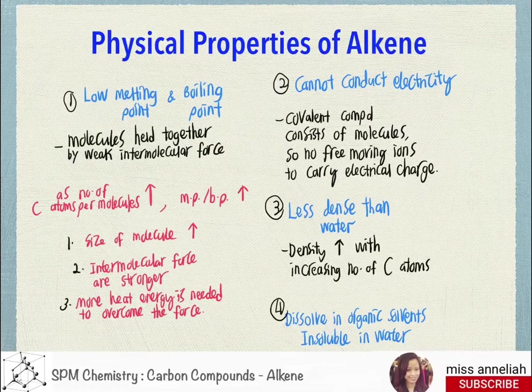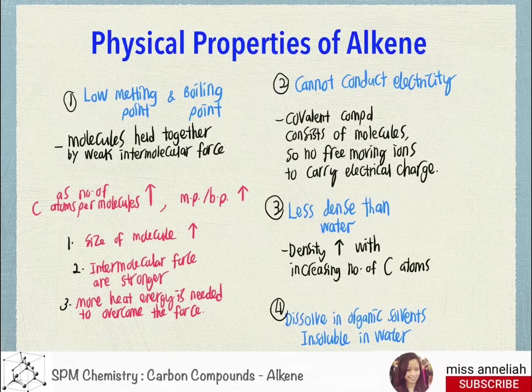Next, we will discuss the physical properties of alkenes, which are very similar to those of alkanes. First, alkenes have low melting points and boiling points because the molecules are held together by weak intermolecular forces. But as the number of carbon atoms per molecule increases, the melting point and boiling point also increase, because the size of the molecules increases, making intermolecular forces stronger, requiring more heat energy to overcome them.